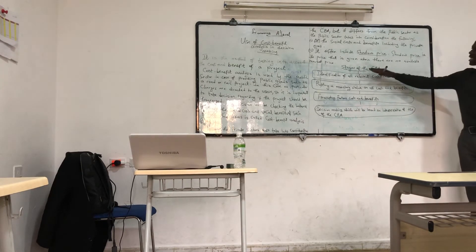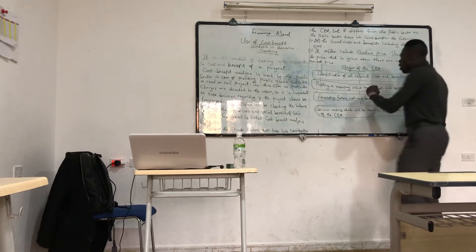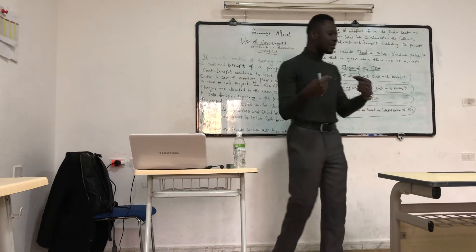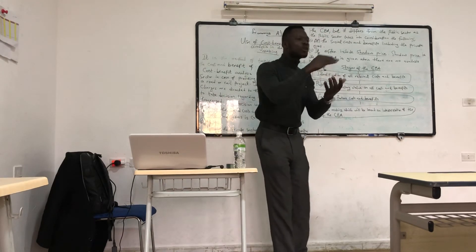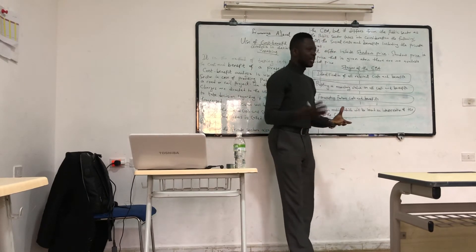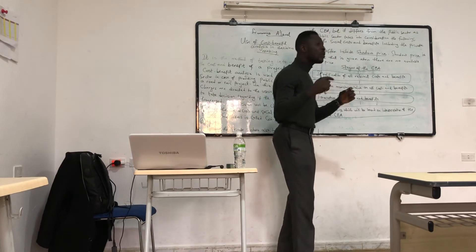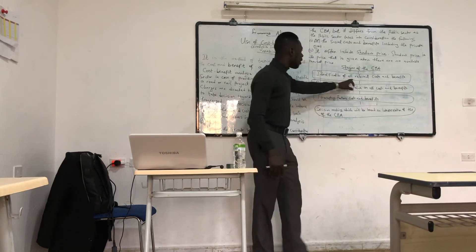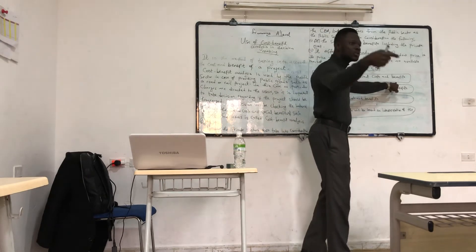The stages of the CBA are as follows. Stage one: identification of all relevant costs and benefits. When you take into account the cost-benefit analysis of a project, the first thing to think about is what are the costs we need to incur, and what are the benefits we stand to enjoy?